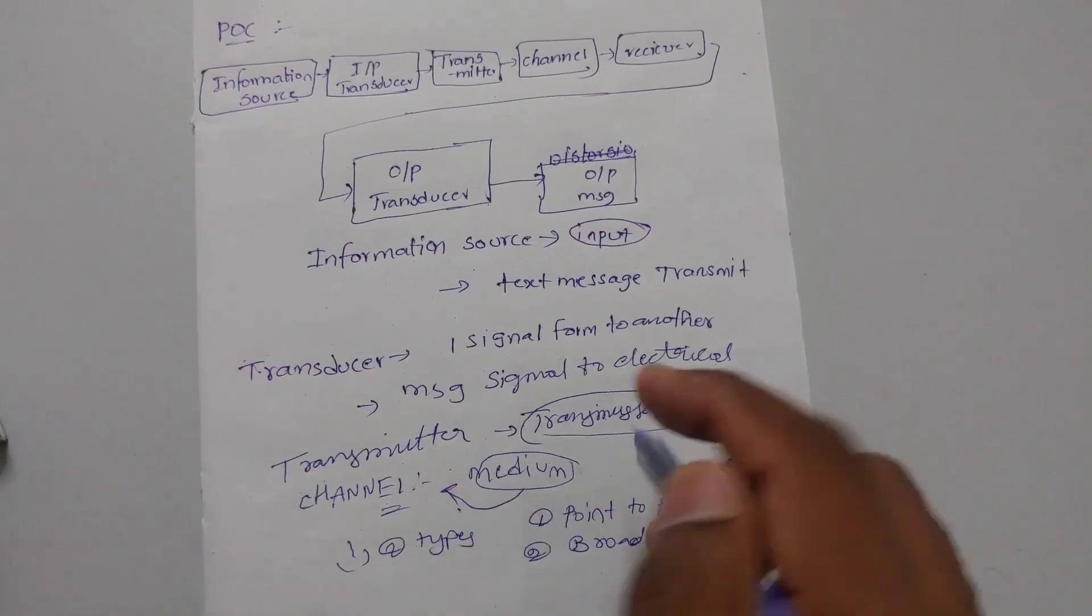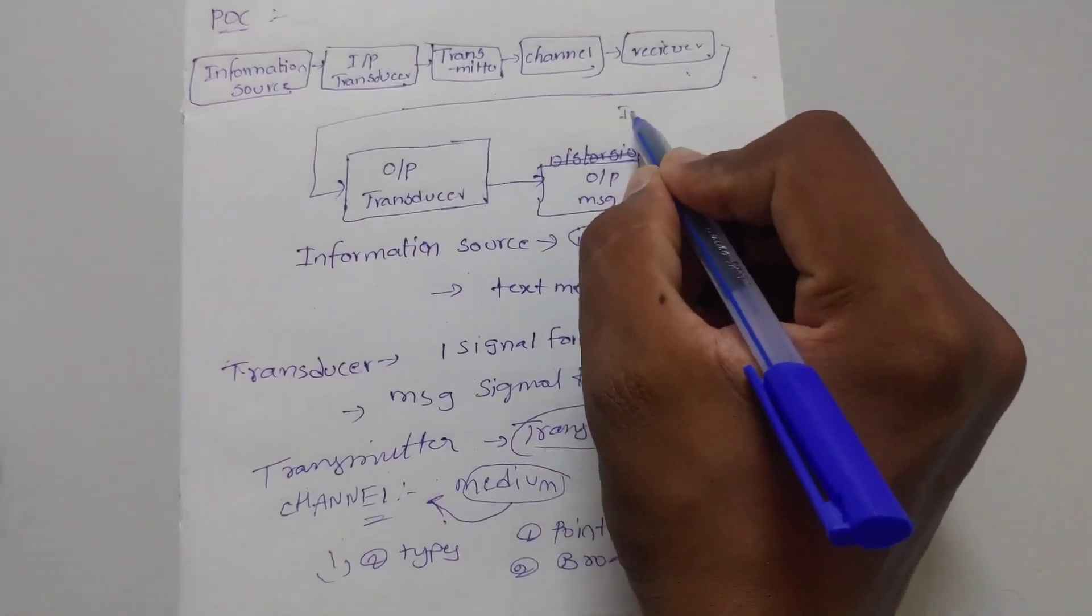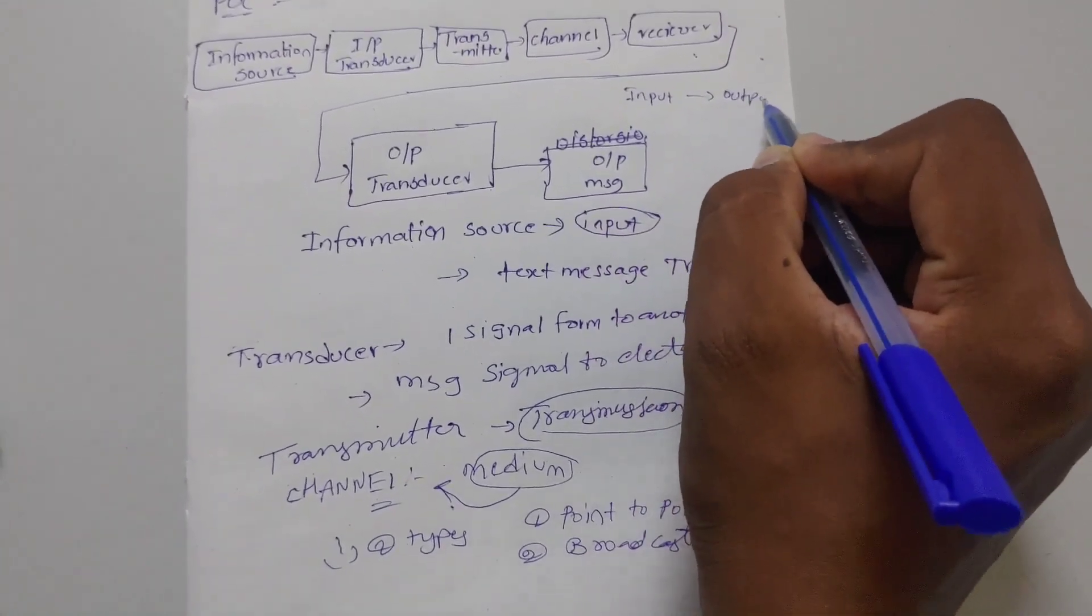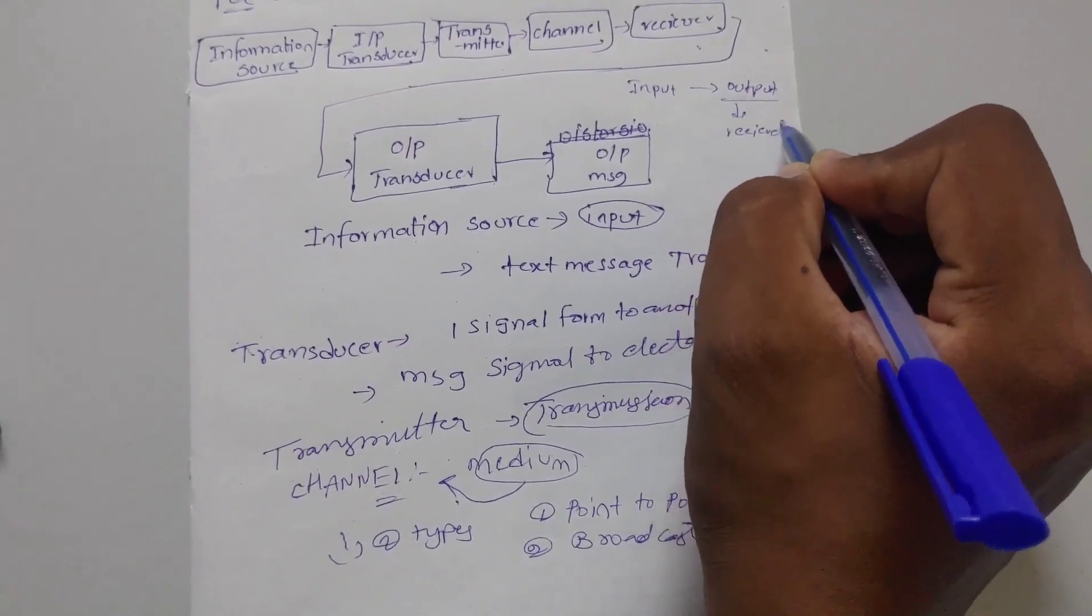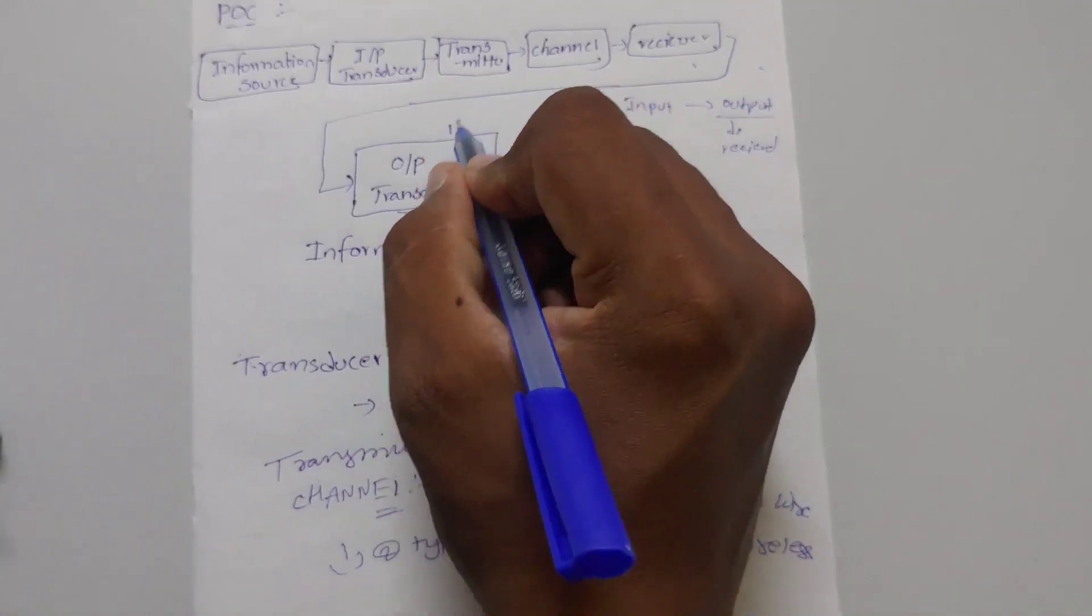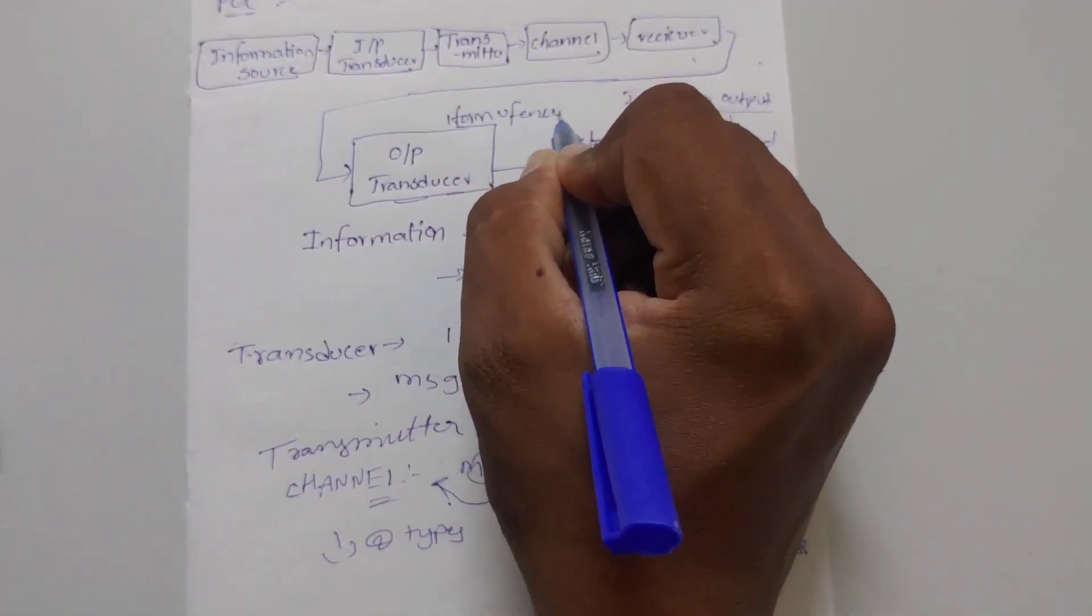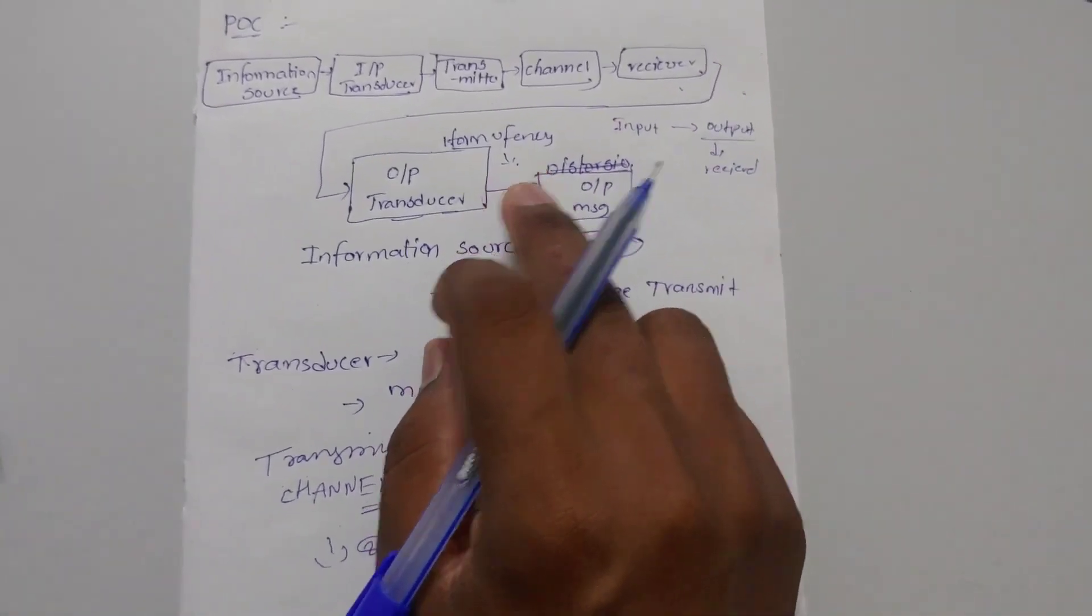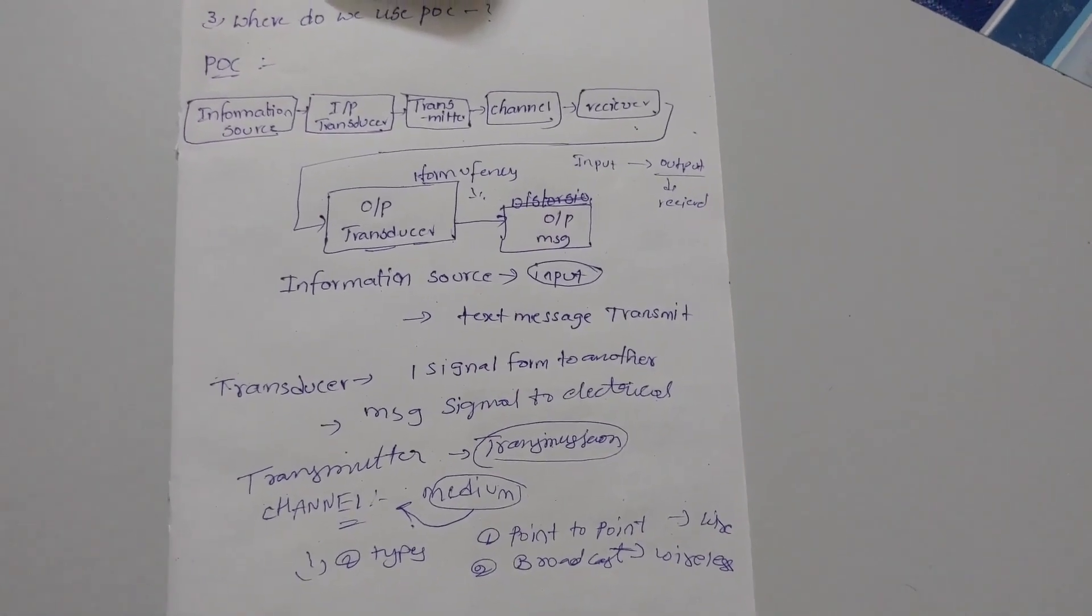Next is receiver. Message when we receive it - like a lover sending message, girlfriend receives the message. Like receiver. Next is output transducer. Transducer converts one form of energy to another form of energy. Output transducer - electrical signal is converted into message signal. Next is output message.